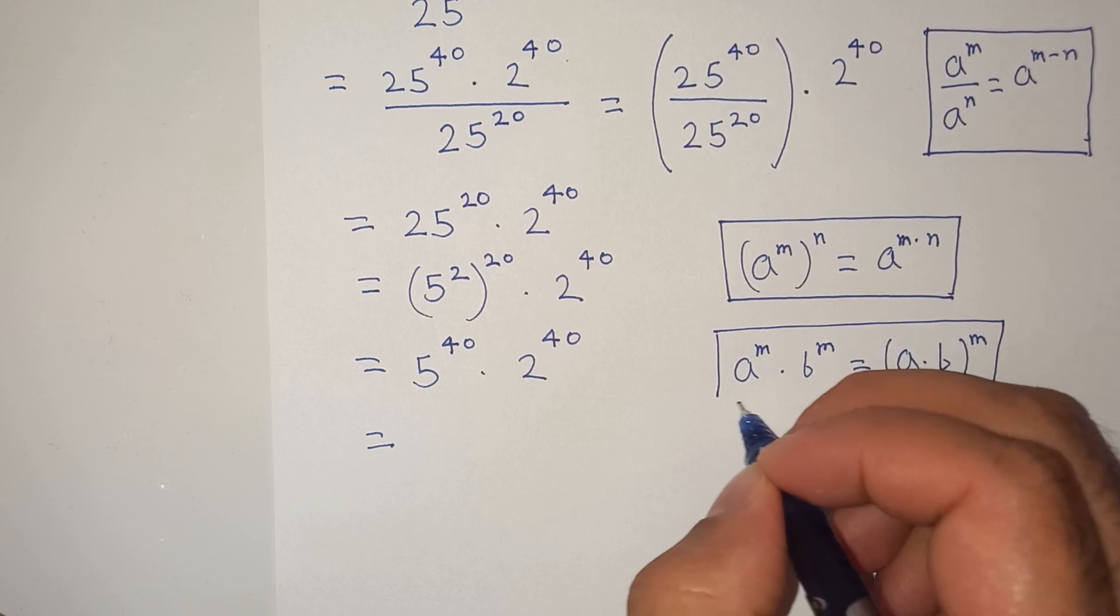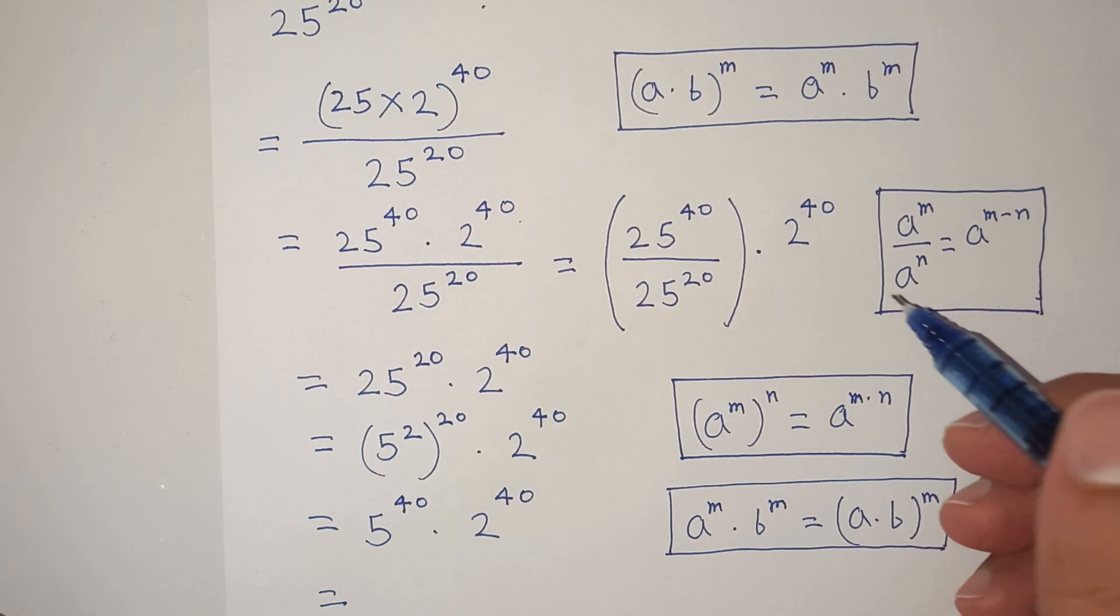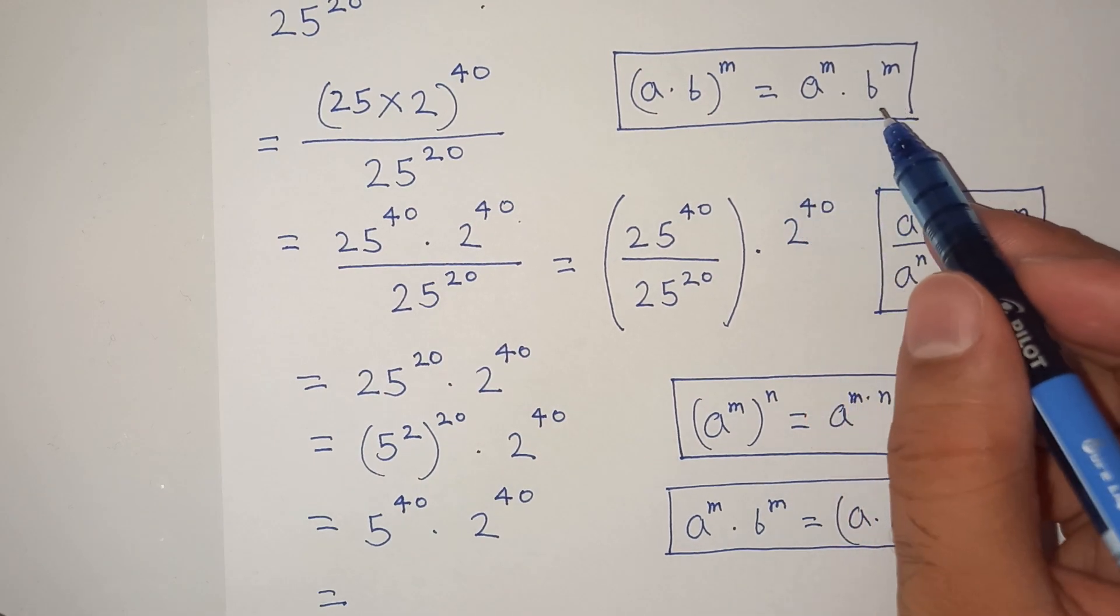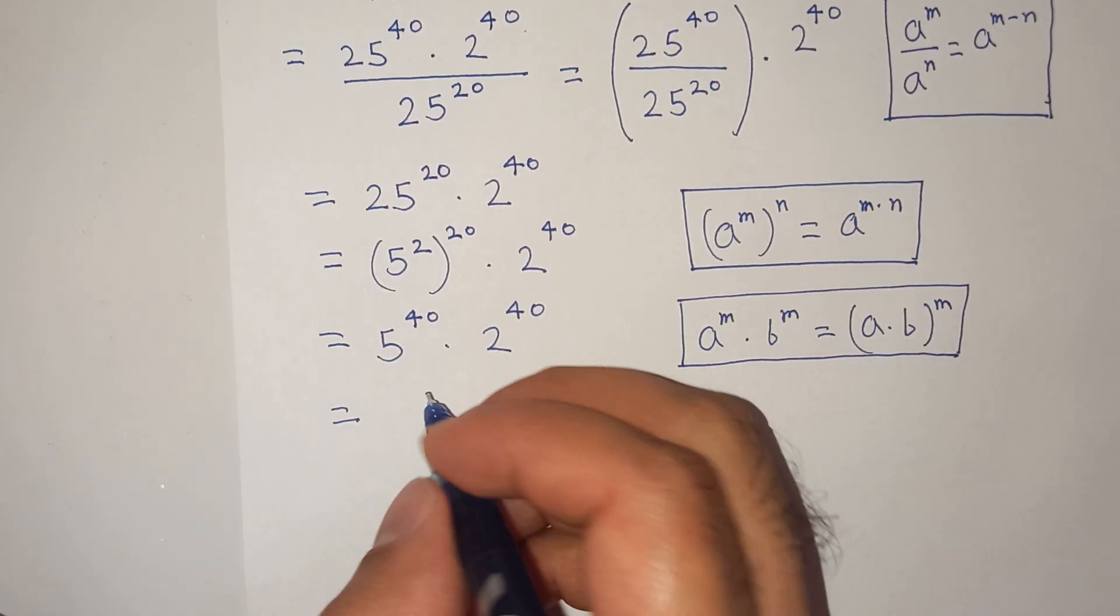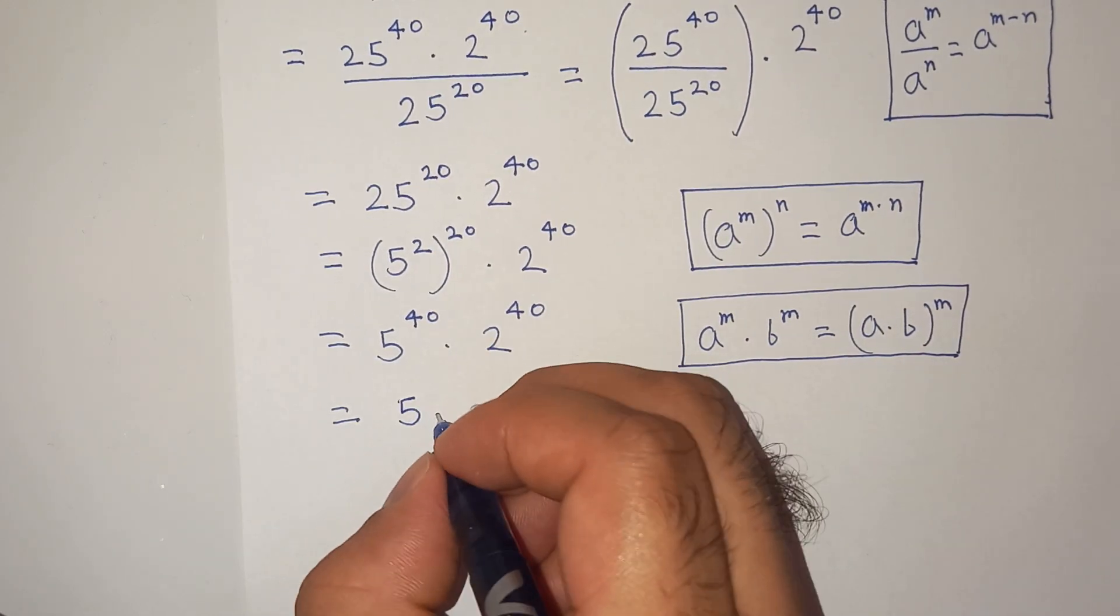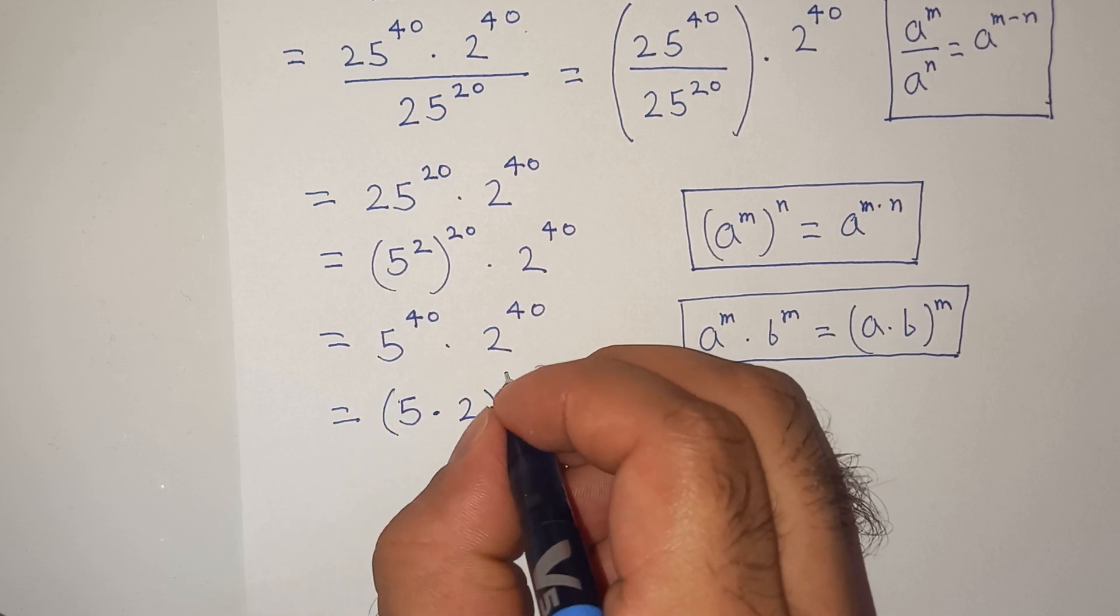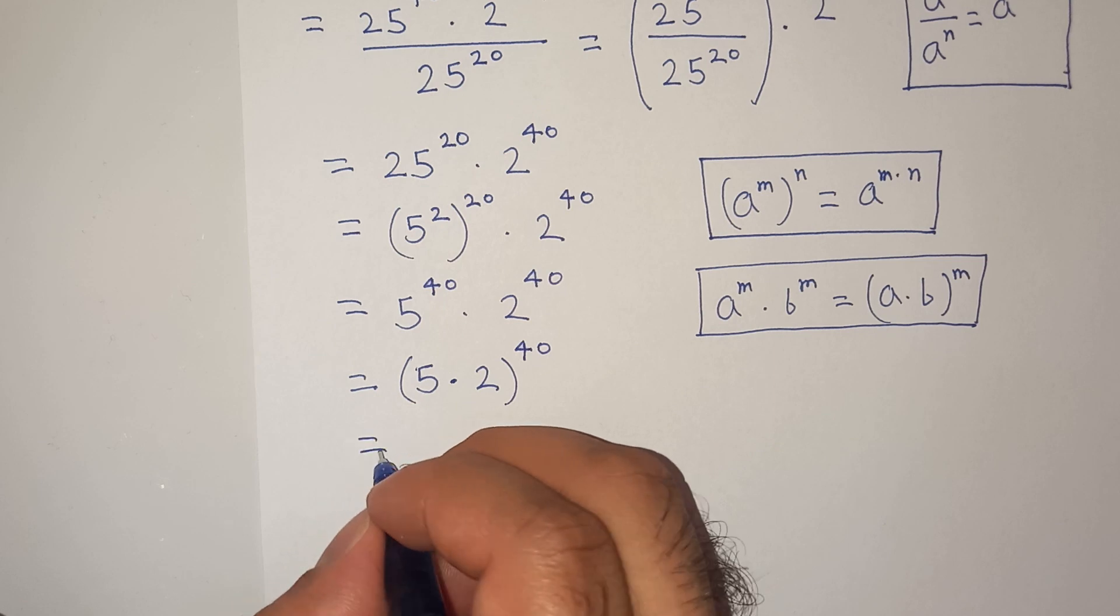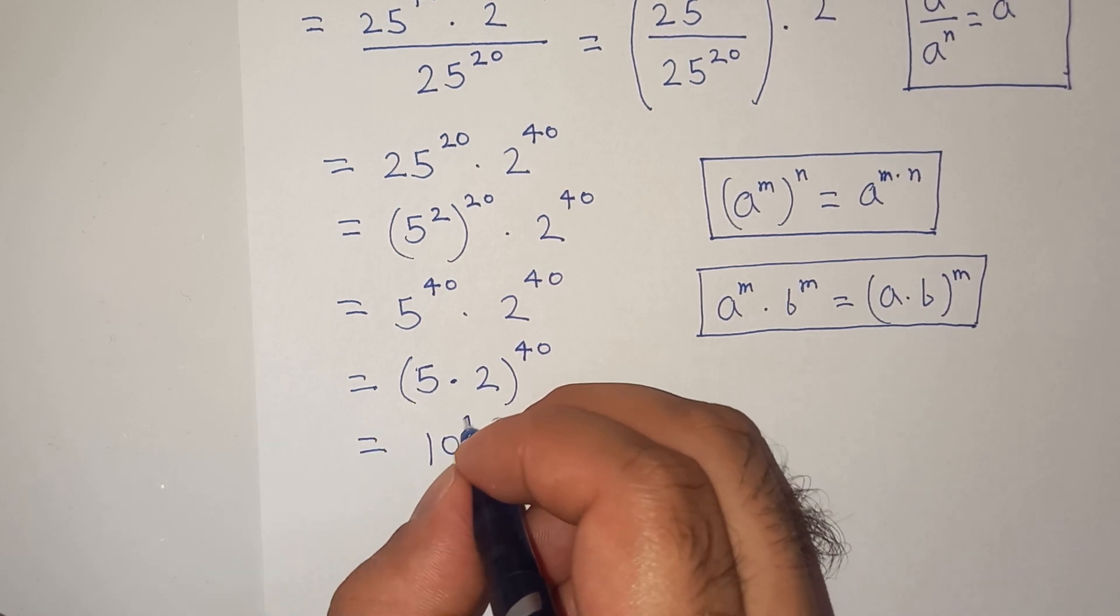So we will have 5 multiplied by 2 in bracket power 40. So 5 multiplied by 2 is 10 and then power 40.